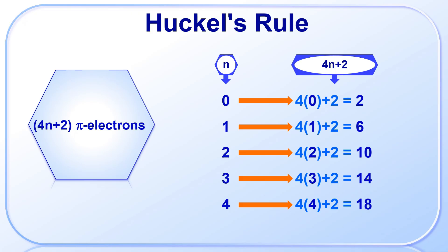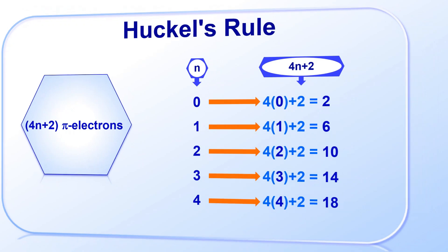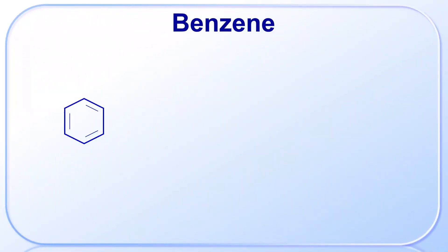Remember, for a compound to be aromatic, it must be cyclic, planar, and have delocalized pi-electrons arranged in a closed loop. Now, let us walk through a few examples.